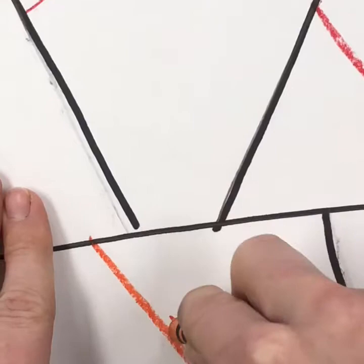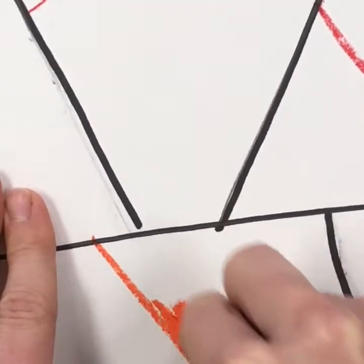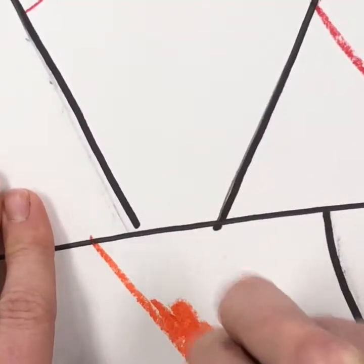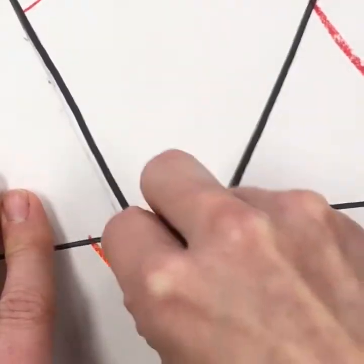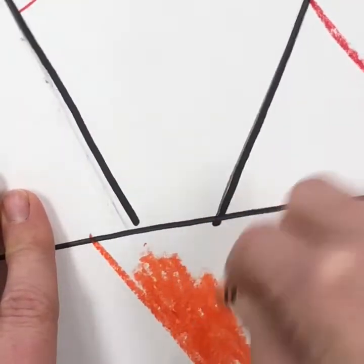Make sure you're coloring very dark and you're going pretty slow. You don't want to go so fast that you tire out your hand and your arm quicker than you need to.